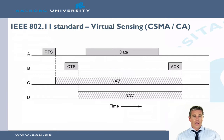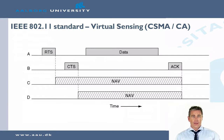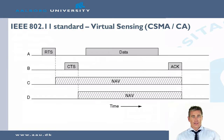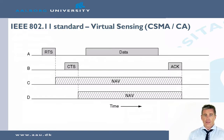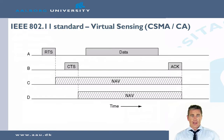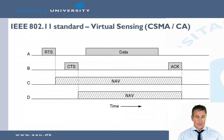Now we have reserved the channel, and A can go ahead and send the data. B can go ahead and send the acknowledgement, and once that acknowledgement is received, the spectrum is again free to use for everyone.